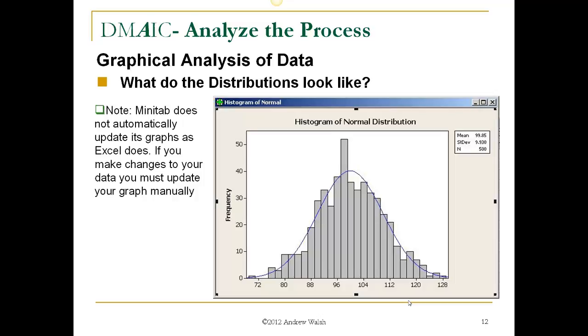Minitab does not automatically update graphs as Excel does. So if you make changes to your data, you must update your graph manually. A green X in the upper left-hand corner means the graph is current. If you see a yellow symbol, that means the graph is not current. You can right-click that symbol and then select Update Graph Now, and that will update the graph to reflect any changes you've made to your data. If for some sad reason you have a white X there, that means the graph is not current and it cannot be updated. So you will have to recreate the graph from any changes you've made to your data.